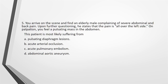Question 5: You arrive on the scene and find an elderly male complaining of severe abdominal and back pain. Upon further questioning, he states that the pain is all over the left side. On palpation, you feel a pulsating mass in the abdomen. This patient is most likely suffering from: A. Pulsating diaphragm lesions. B. Acute arterial occlusion. C. Acute pulmonary embolism. D. Abdominal aortic aneurysm.